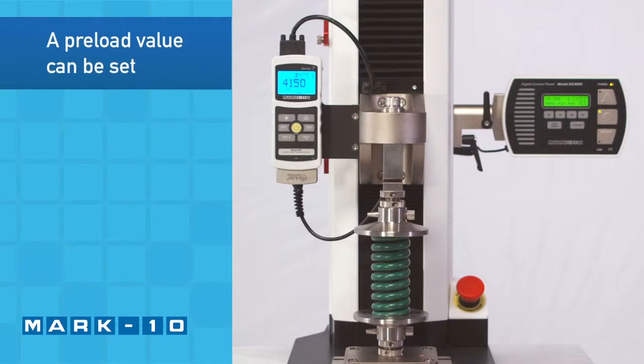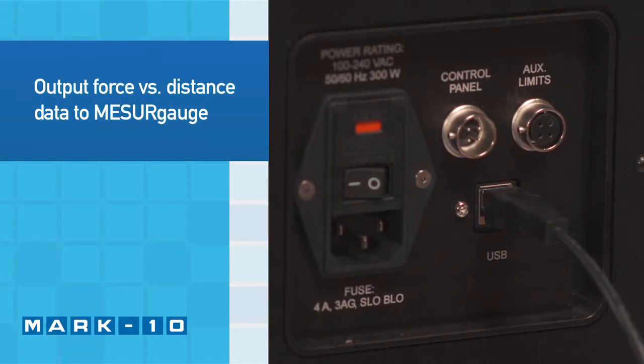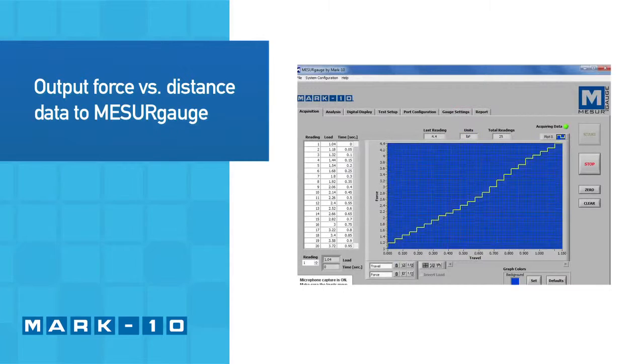A preload value can be set to automatically zero the travel display at initial sample contact. Force and distance data can be output to a PC via USB for graphing and reporting.